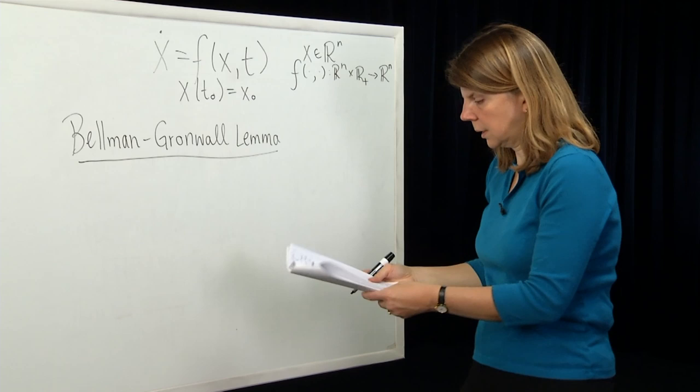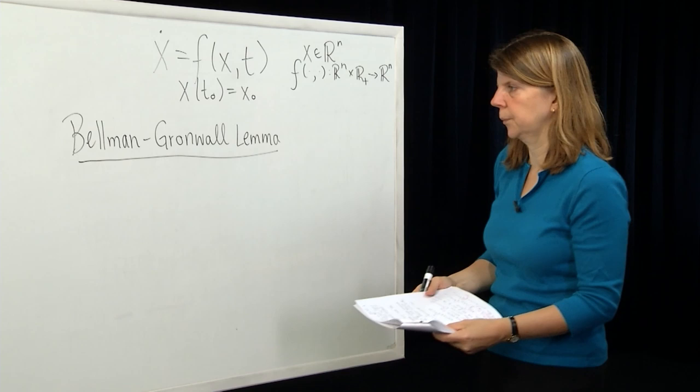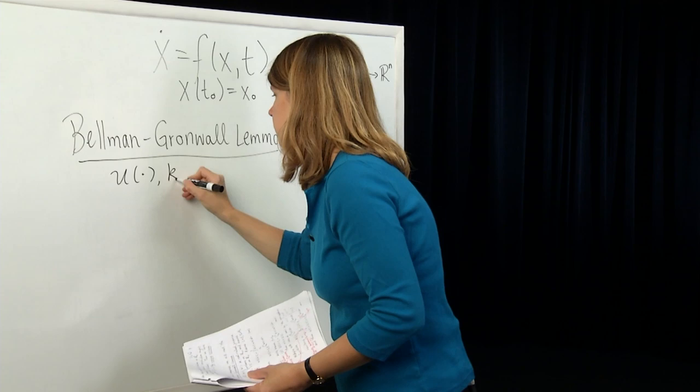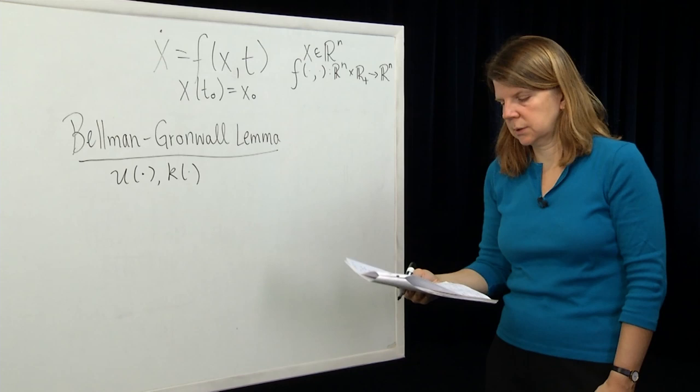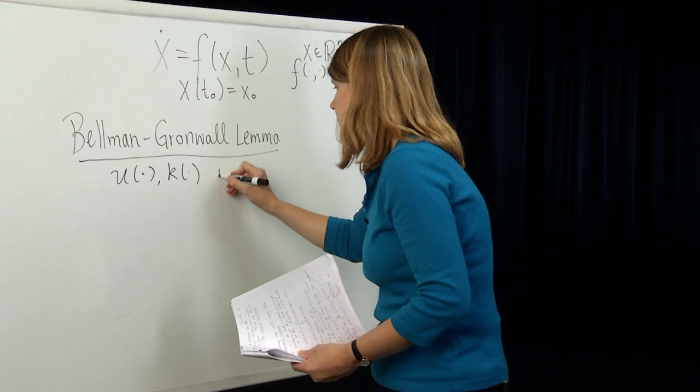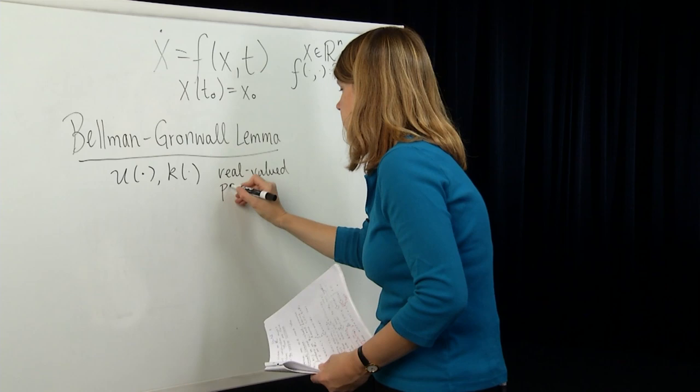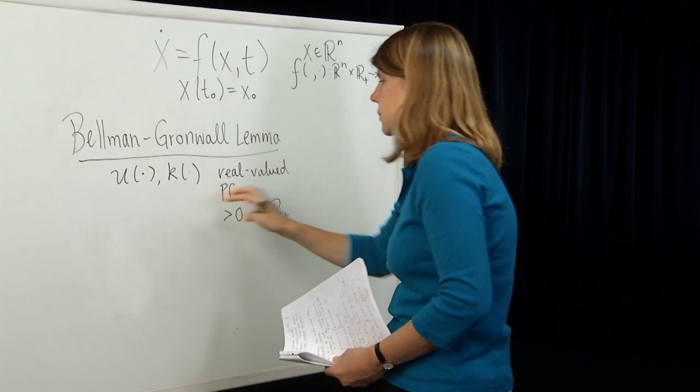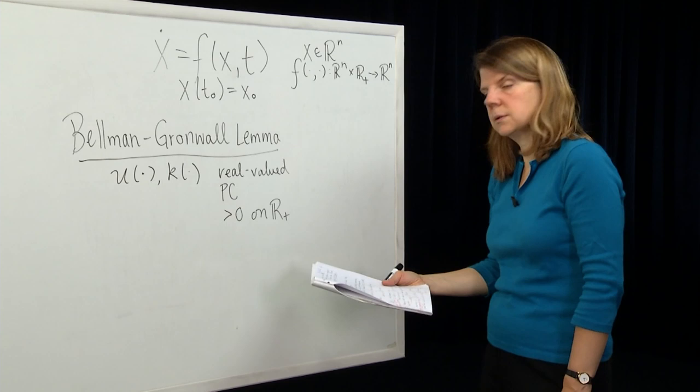So let's state the Bellman-Gronwall Lemma. It's a nice little lemma, which is easy to state and easy to prove. Suppose we had functions u and k. These are real-valued functions; they're piecewise continuous and they're positive — greater than zero on R+. So they're going to be functions of time: real-valued, piecewise continuous, and positive on R+.